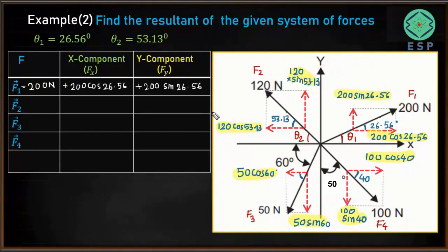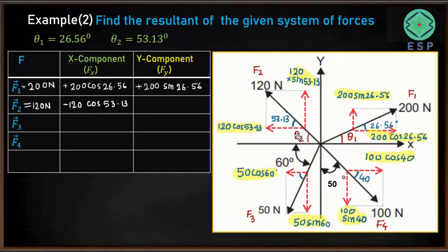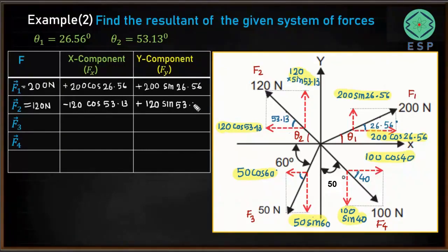For F2 (120 Newton), the x component acts towards the left — that is, the negative x direction — so it is minus 120 cos 53.13. The y component acts upward, which is the positive y direction, so it is positive: +120 sin 53.13. Sign convention is very important here.